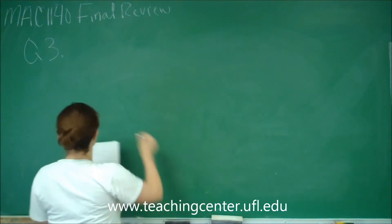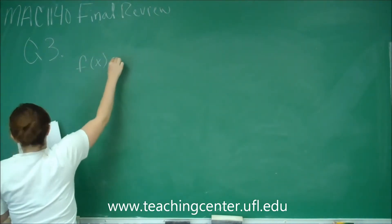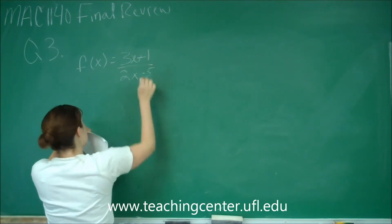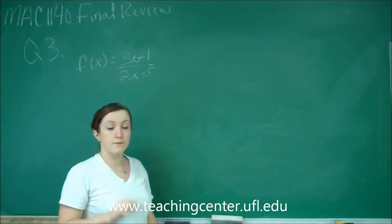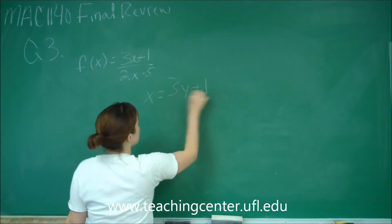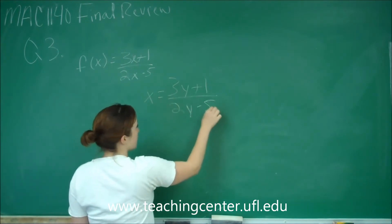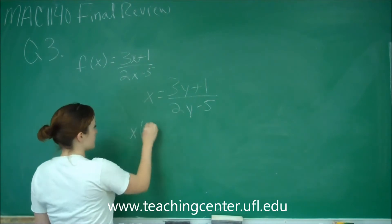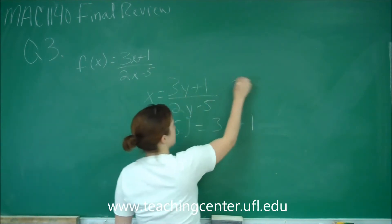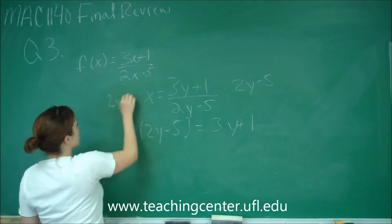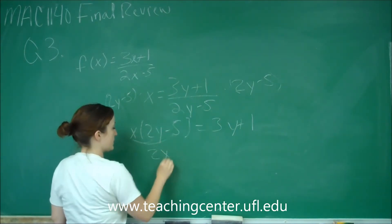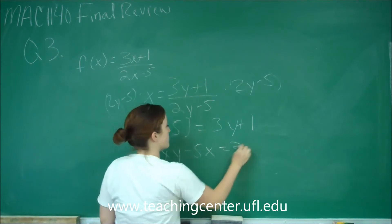Part c says find the inverse function of f(x) = (3x + 1) / (2x − 5). The way that we find inverse functions, the very first step is we're going to switch x and y. So we've got x = (3y + 1) / (2y − 5). We're going to multiply both sides by (2y − 5), so we get x(2y − 5) = 3y + 1. Then we distribute x in: 2xy − 5x = 3y + 1.